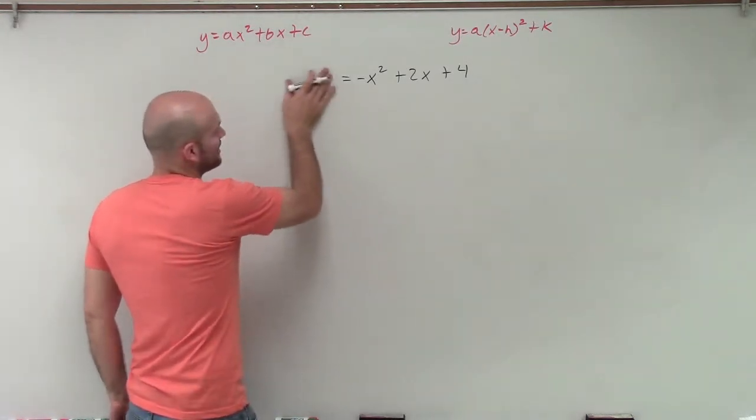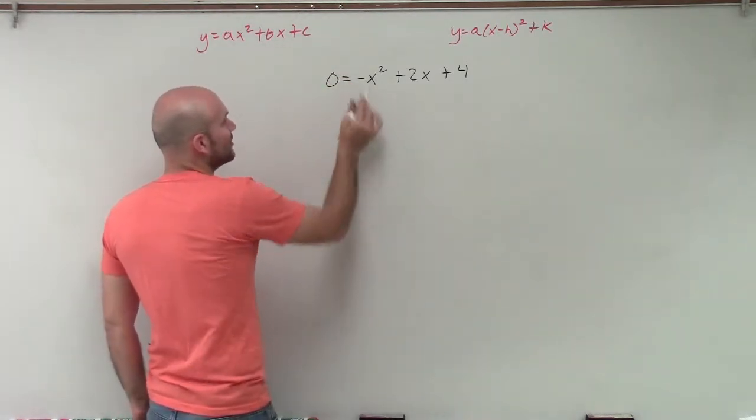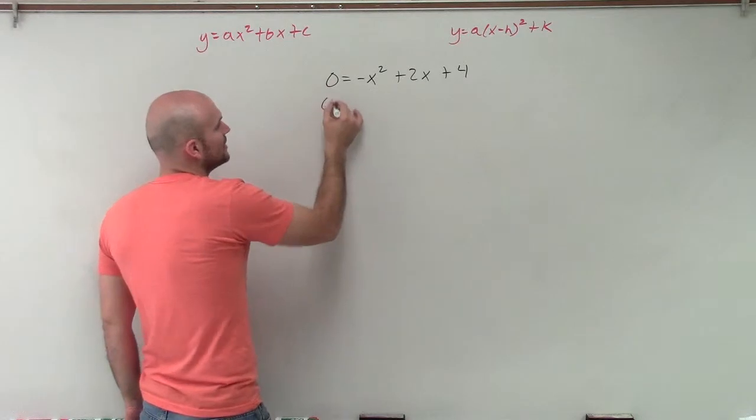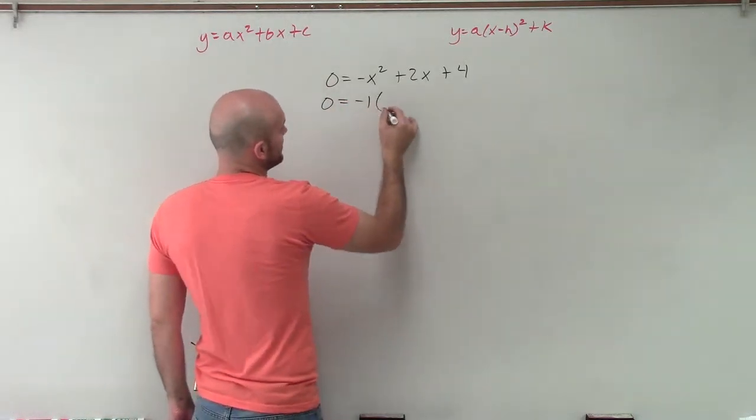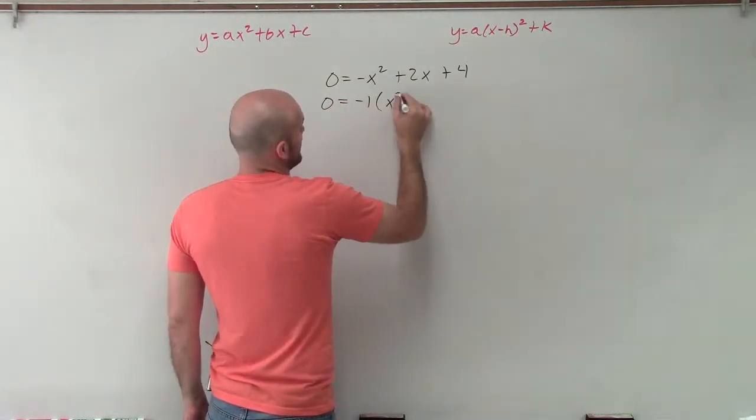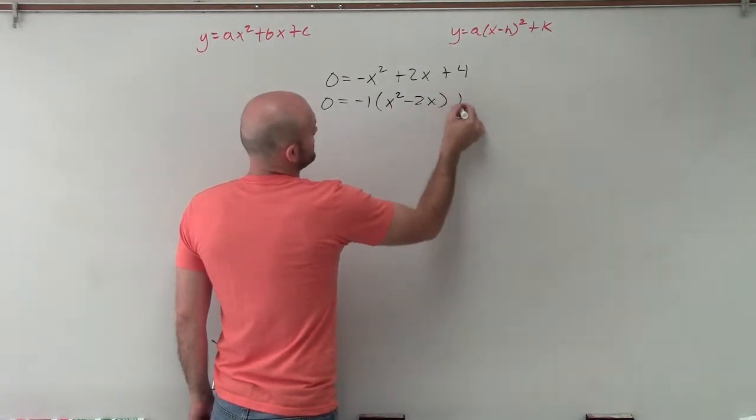So since we're going to be solving by completing the square, I'll set this equal to 0. And then I need to factor out this negative 1. So 0 equals negative 1 times x squared minus 2x plus 4.